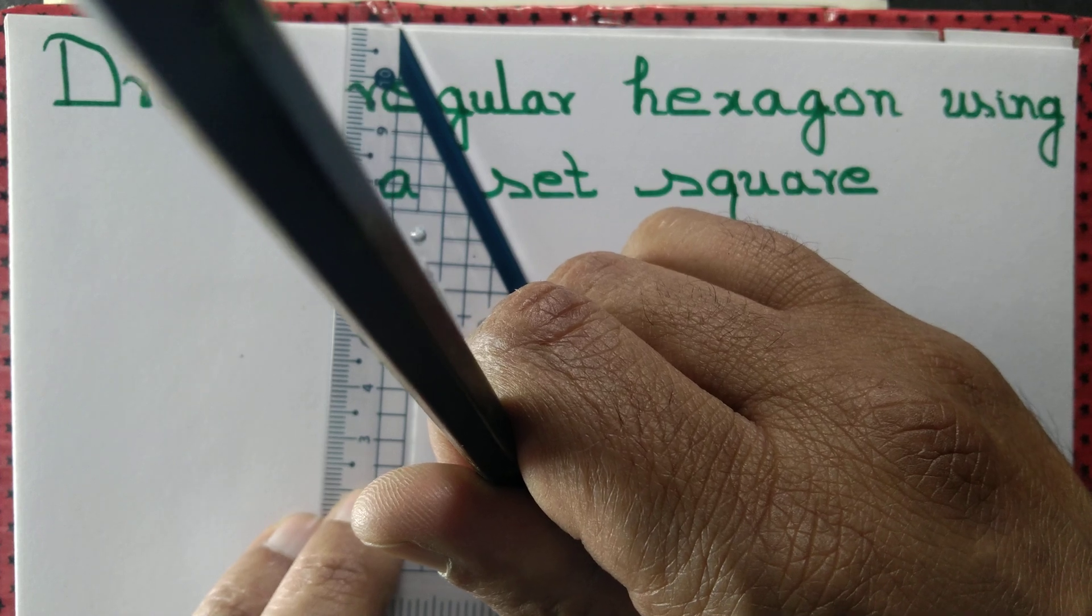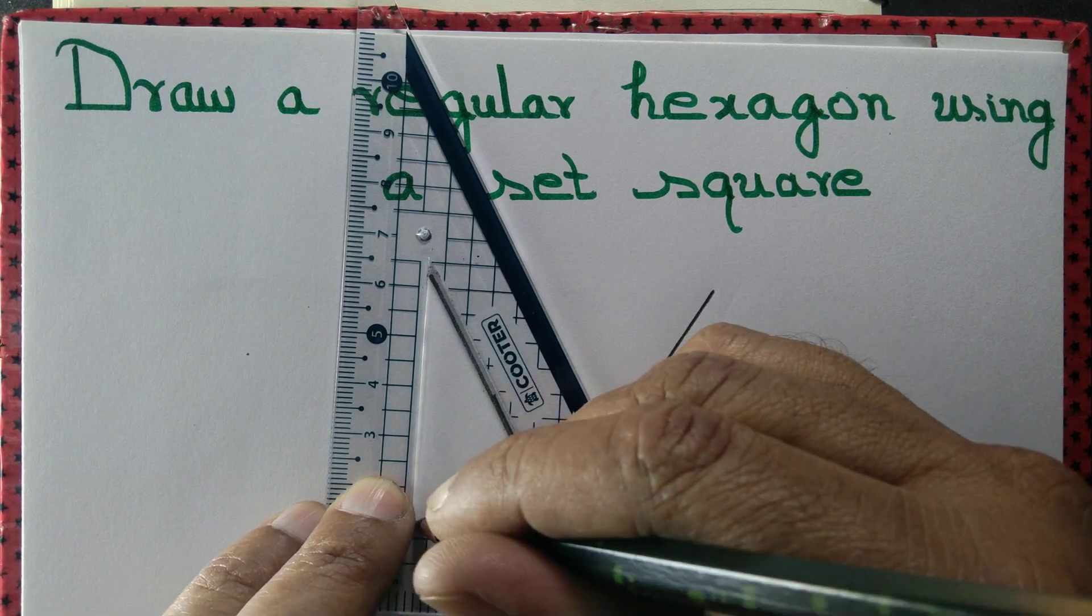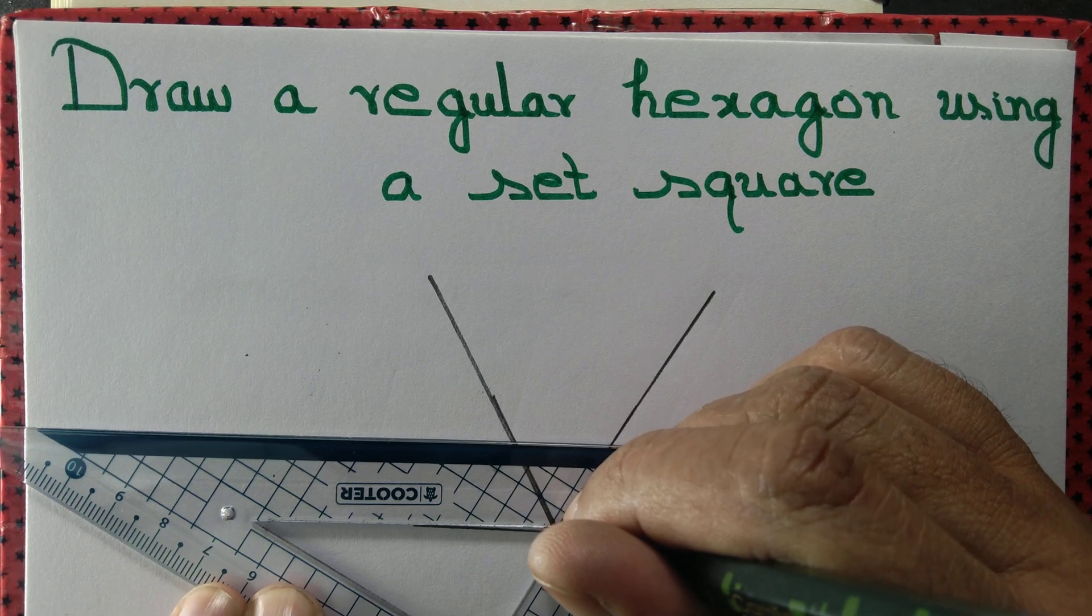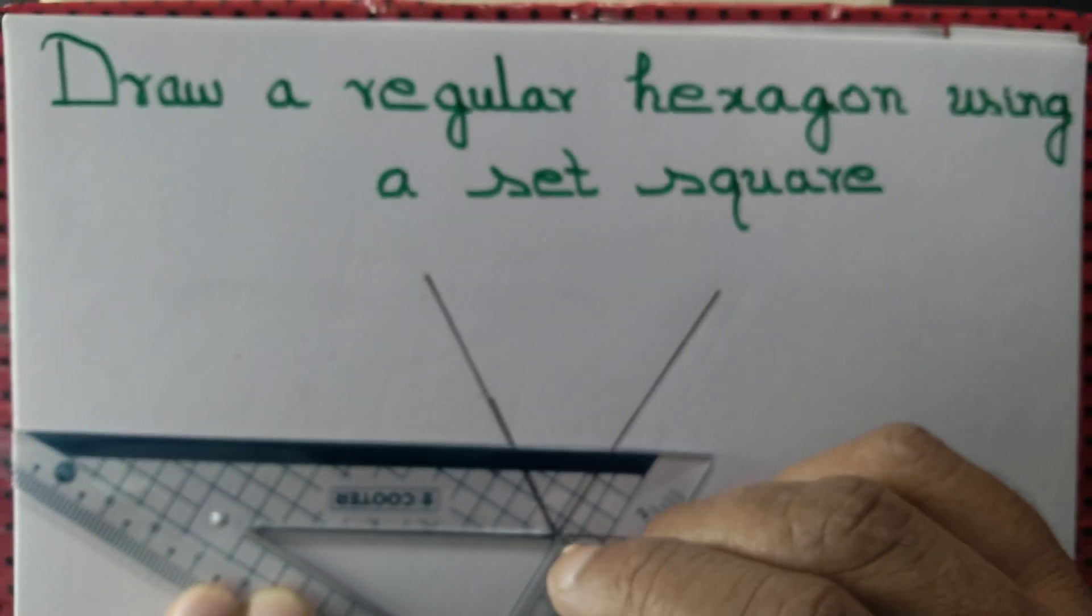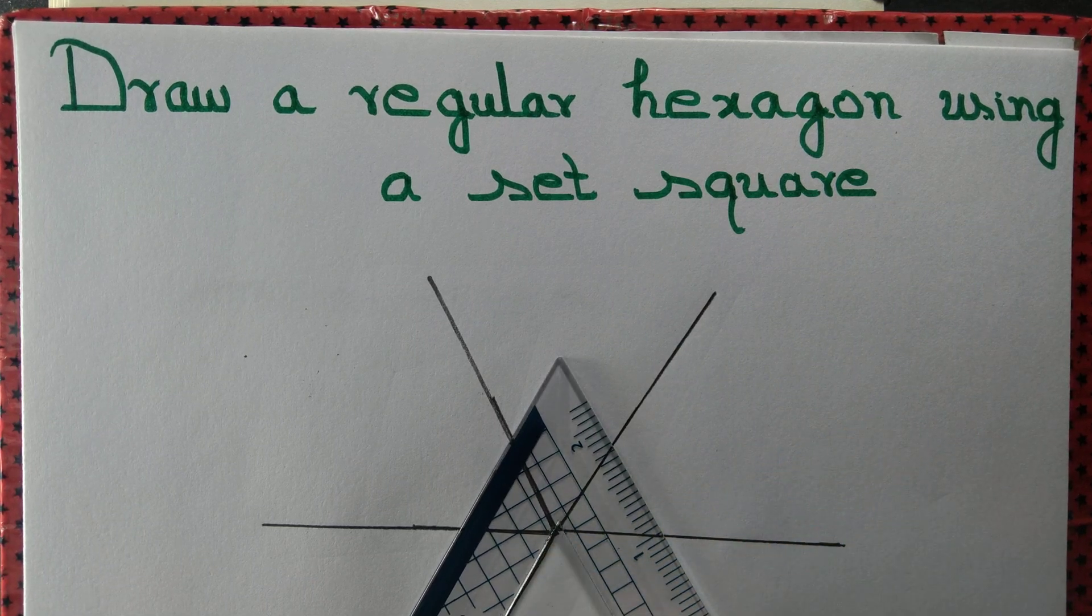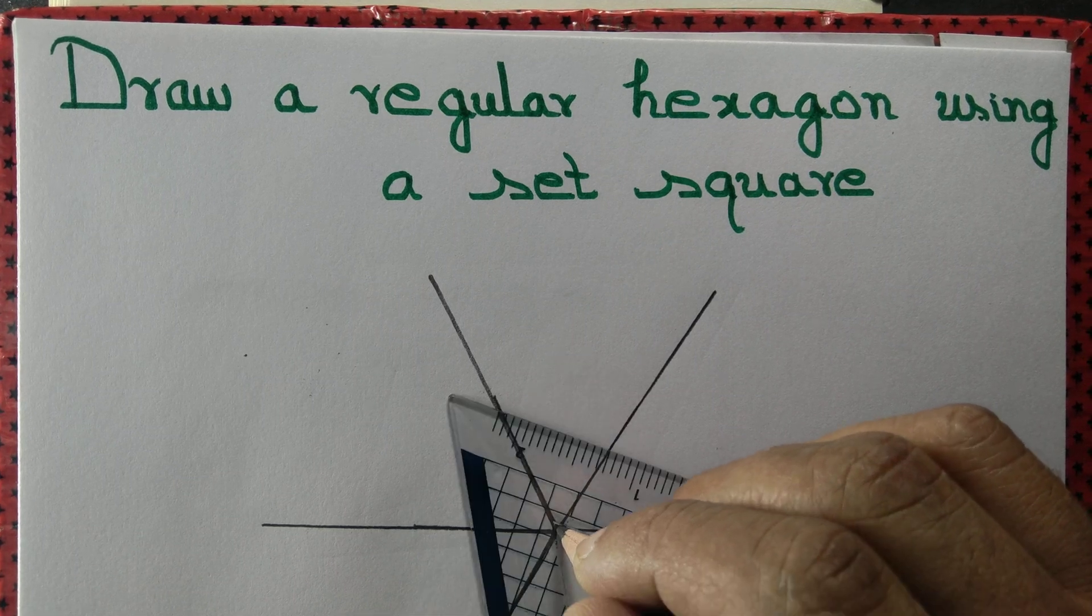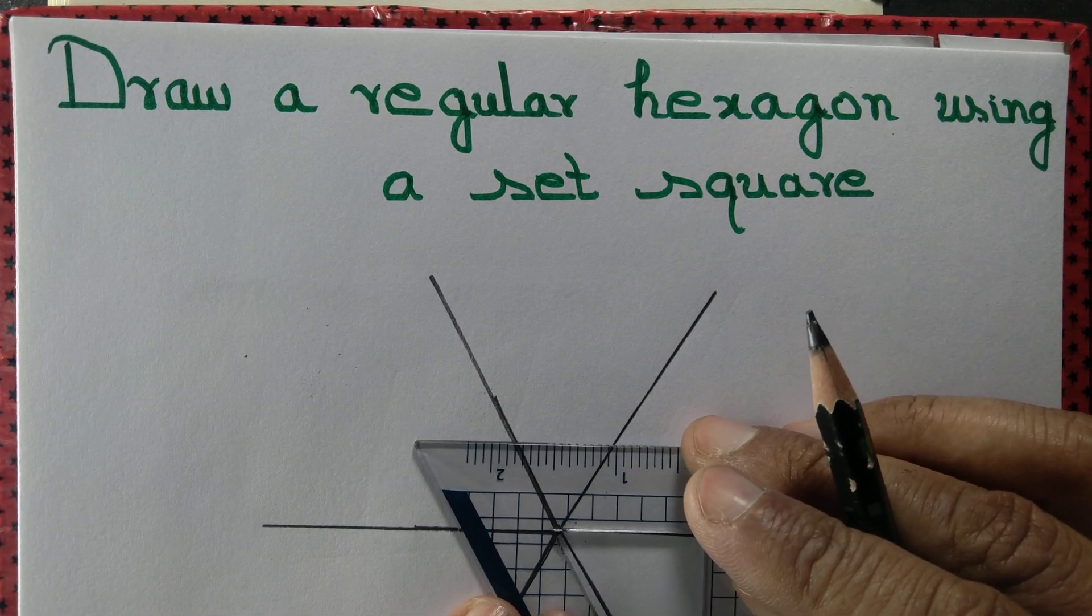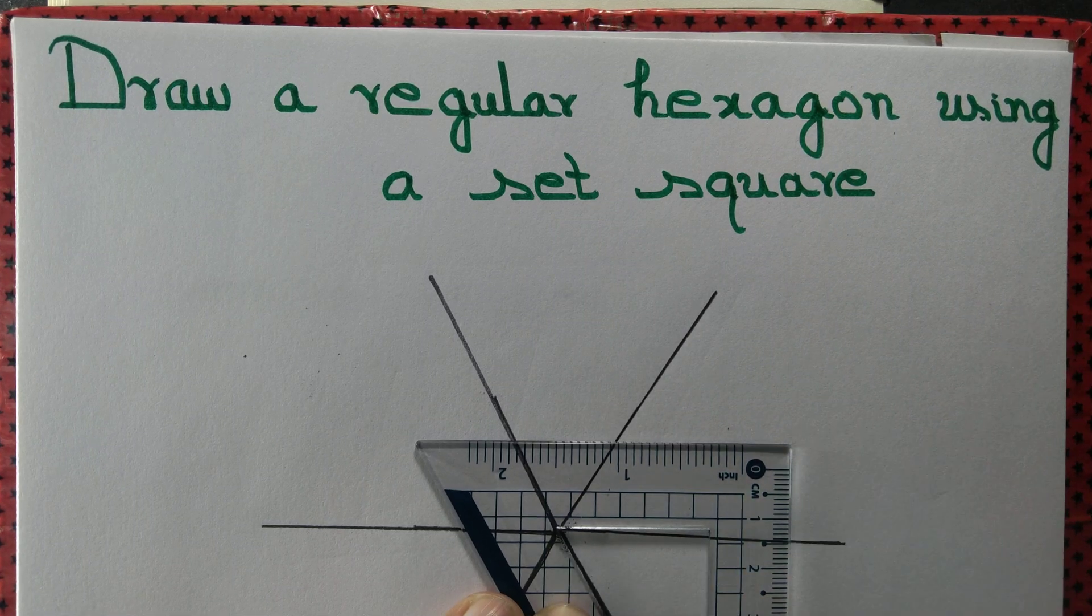Let us draw the third angle that measures 60 degrees, and then the fourth angle, and then the fifth angle. Lastly, we have the sixth angle that measures 60 degrees.